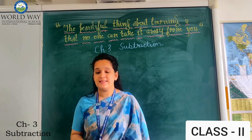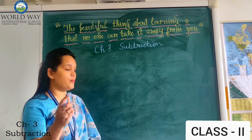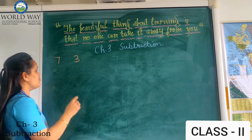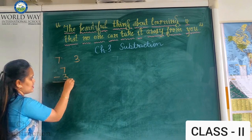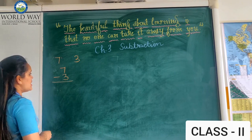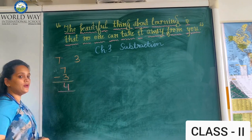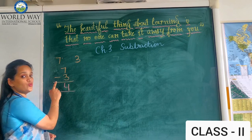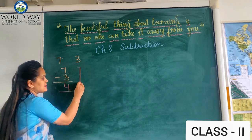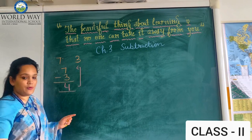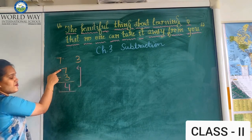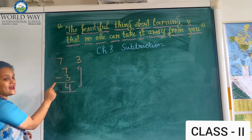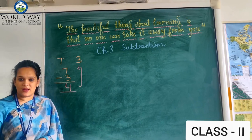So our first fact is: if you are having two numbers, suppose 7 and 3, and if you will remove 3 from 7, the answer will be 4 — or you can say the difference will be 4. So this difference will always be lesser than the bigger number. If you remove 3 from 7, you will get a difference of 4, and 4 will always be lesser than 7.